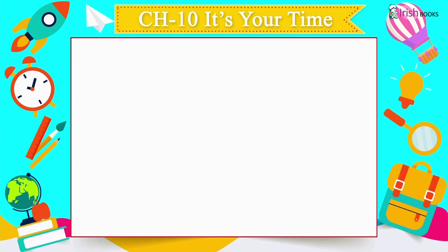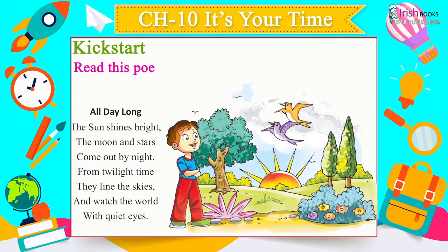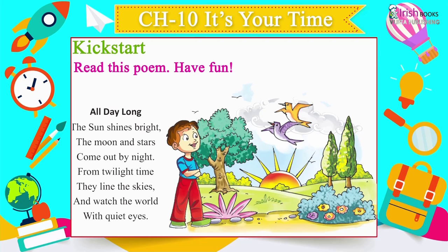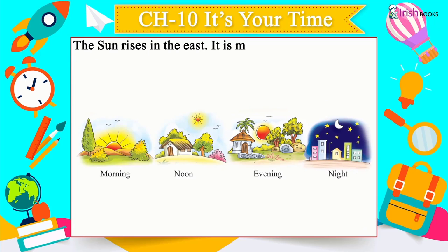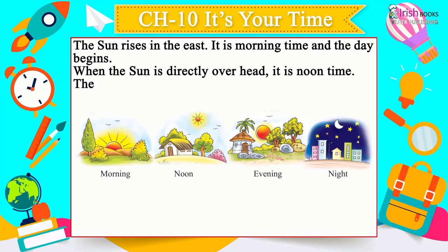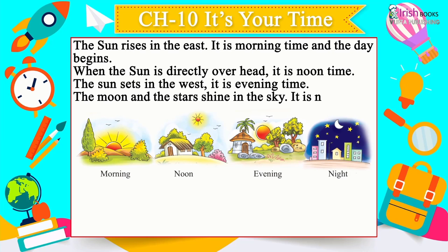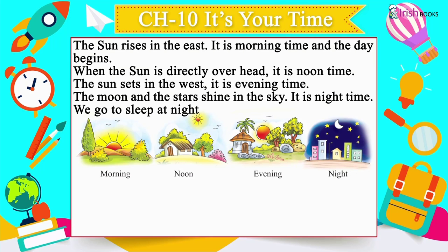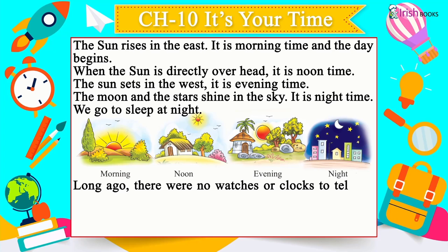Chapter 10: It's Your Time. The sun rises in the east — it is morning time and the day begins. When the sun is directly overhead, it is noon. The sun sets in the west — it is evening. The moon and stars shine at night. Long ago there were no watches or clocks; people told approximate time using the sun and the length of their shadows. Now we use watches and clocks.